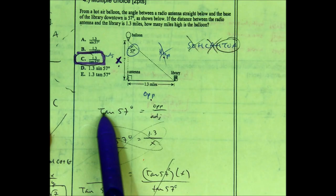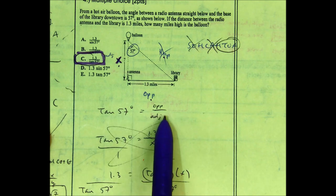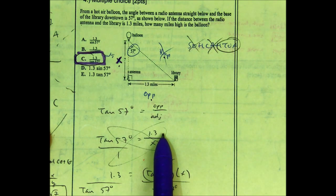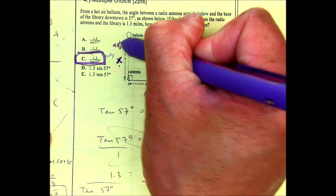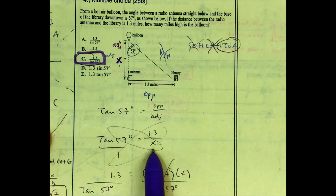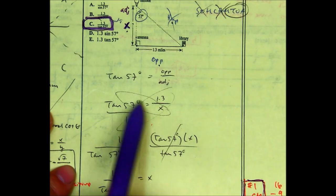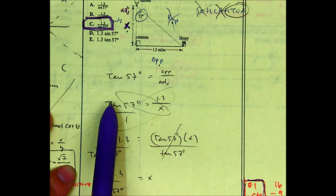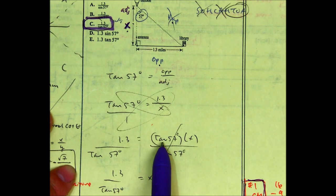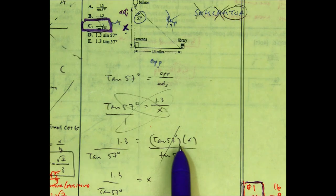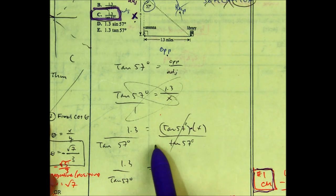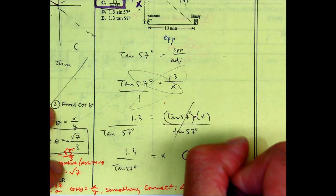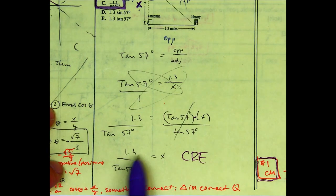Tangent of the angle, tangent of 57 degrees, equals the opposite over the adjacent. The opposite side is 1.3. This adjacent side over here is X. To solve this, I'm going to cross multiply. 1 times 1.3 is 1.3. X times tangent of 57 is X tangent of 57. To get X by itself, I'm going to have to divide, because there's multiplication here. My calculator-ready equation, CRE, calculator-ready equation, is 1.3 over tangent of 57.